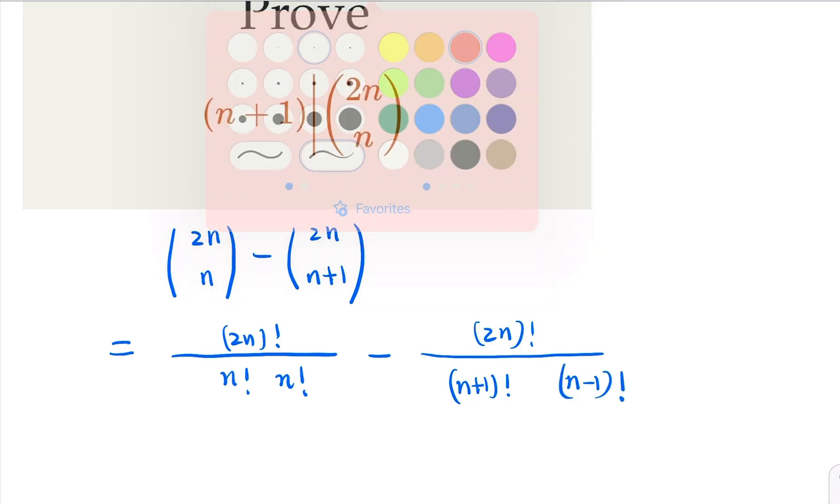So what we're going to do for the first fraction, we're going to multiply n plus 1 on both top and bottom. And for the second one we're going to multiply n on the top and bottom.